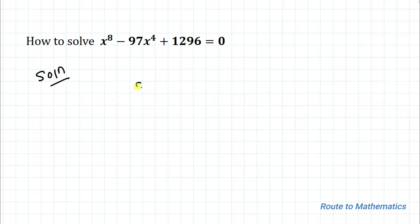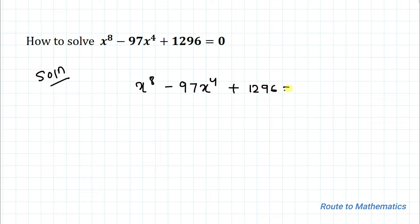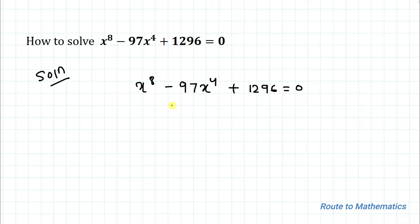We have given x to the power 8 minus 97 x to the power 4 plus 1296 equals to 0. The fundamental theorem of algebra states that for a polynomial of order n, it must have n number of roots if the coefficients are real. Here all the coefficients are real, and since the highest degree is 8, this equation must have 8 solutions for x.